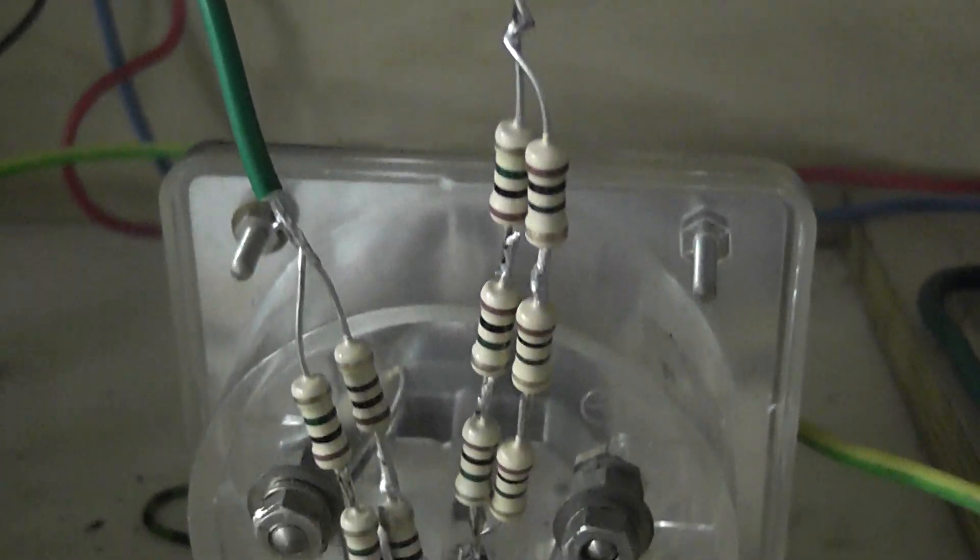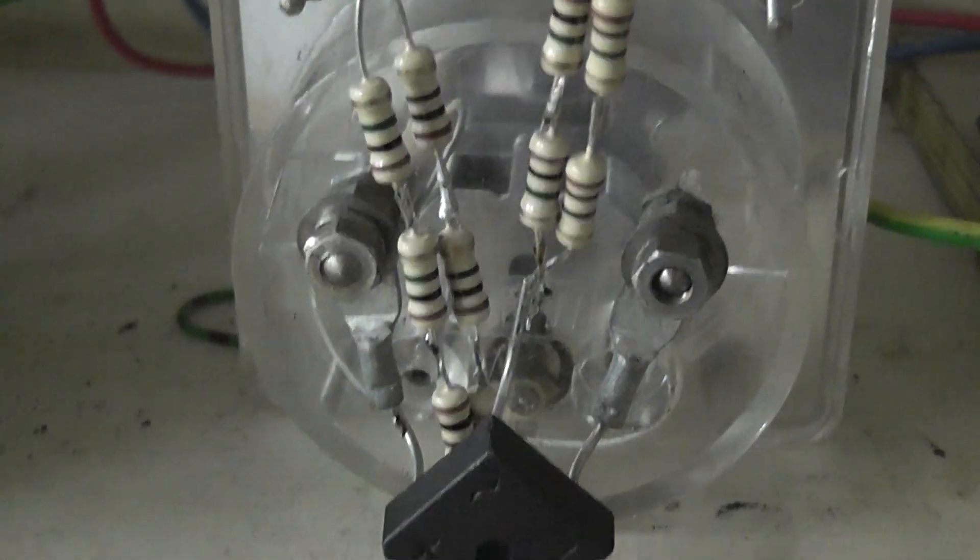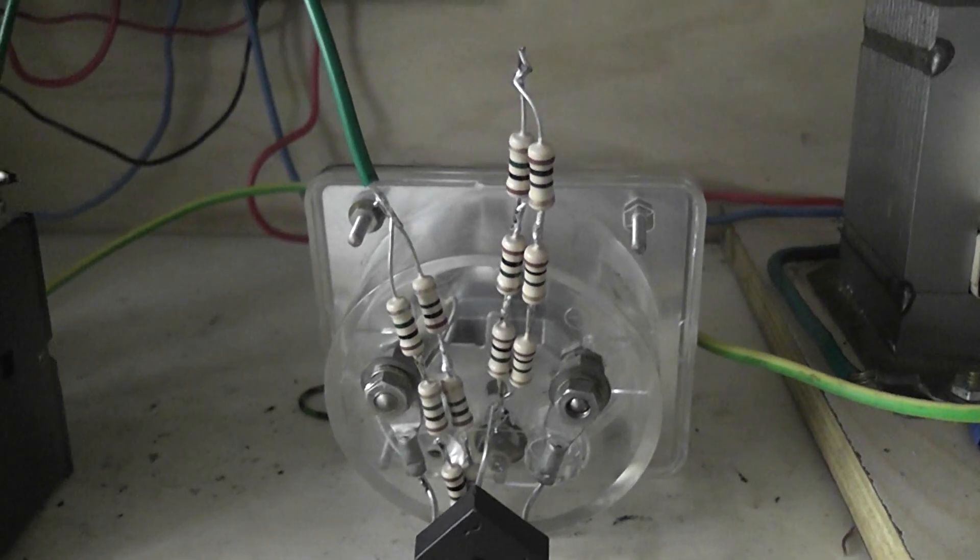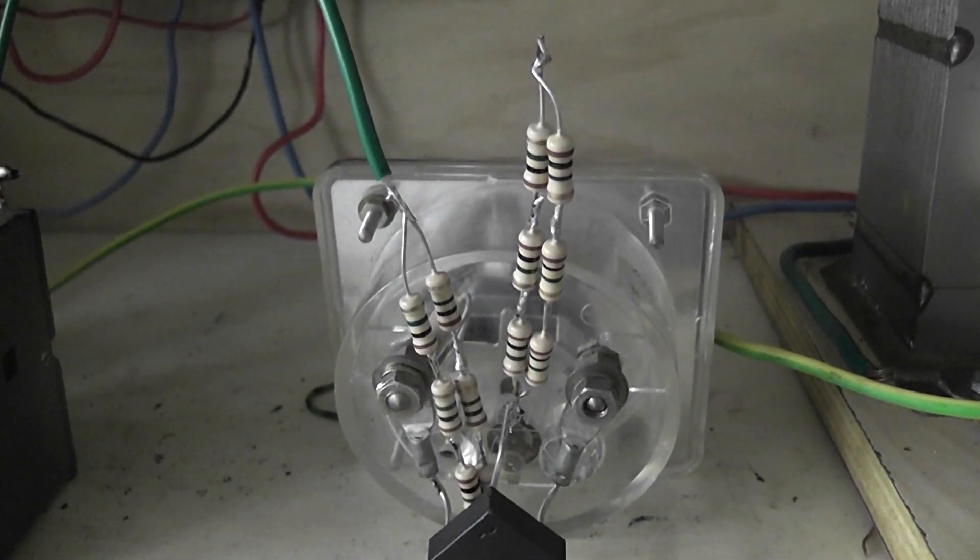So basically it's 10 meg, 10 meg, 10 meg. And then a bridge rectifier and then 10, 10, 10. But then in parallel it's 5 meg each. So I got a good deflection on the meter for about 30 megaohms.